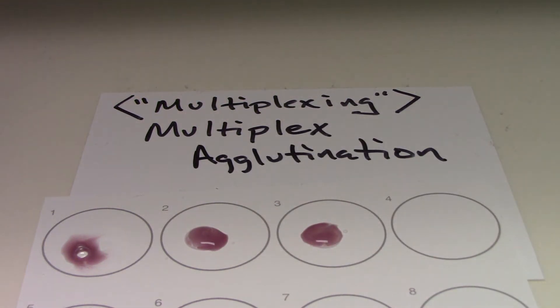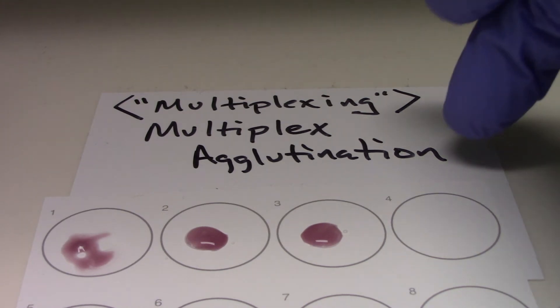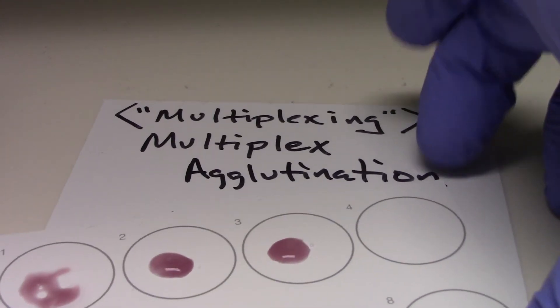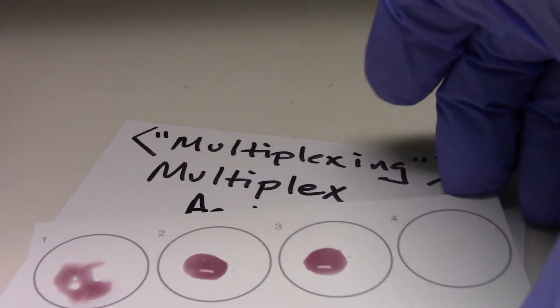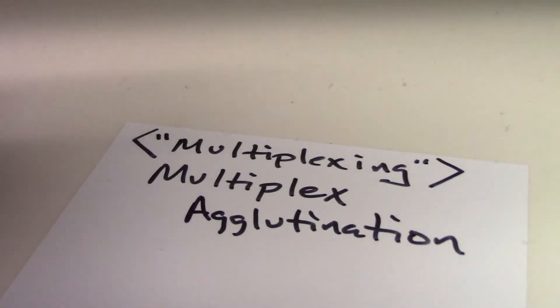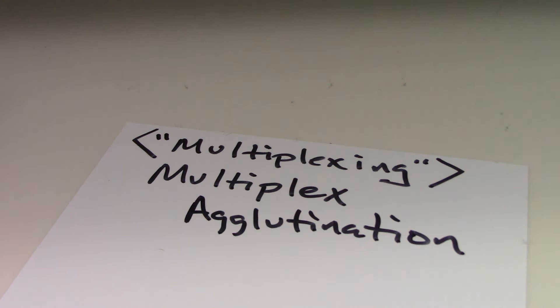This is our mixture of antibodies. Now, what I'm going to do with this is I'm going to place it on a rotator. That rotator will mix the specimens.